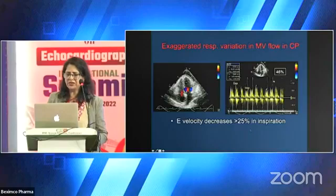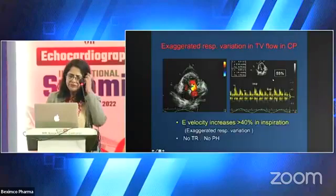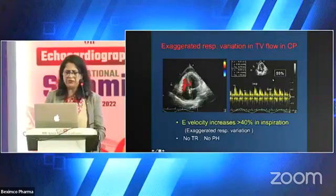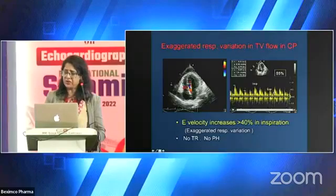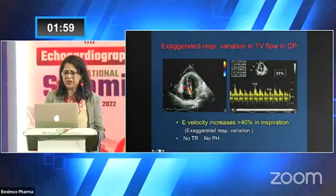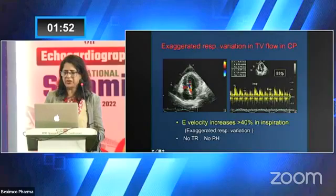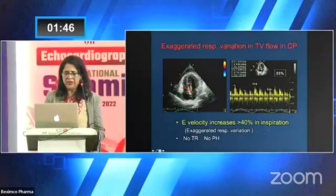Looking at the tricuspid flow in constrictive pericarditis: during inspiration, flow increases; during expiration, it decreases. A difference of more than 40% between inspiration and expiration is significant. Here the respirometer shows the upslope as inspiration and downslope as expiration, with a 55% difference in this case, which is suggestive of constrictive pericarditis. There is no TR as you can see, and we usually don't get pulmonary hypertension in constrictive pericarditis.